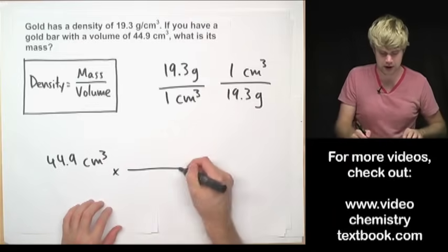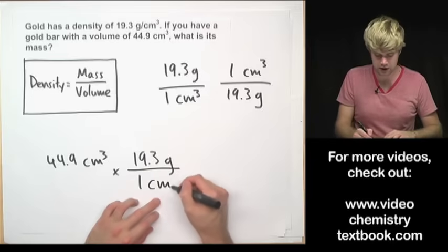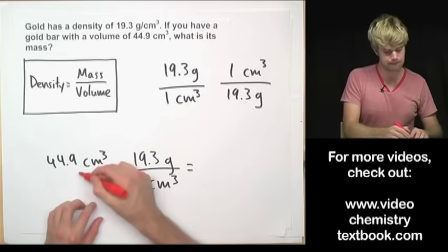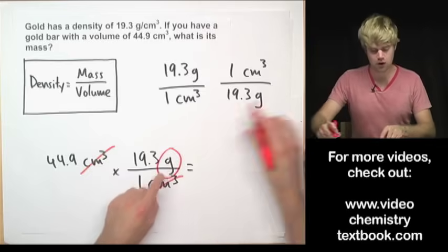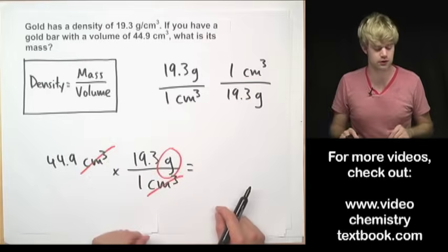I'm going to write it in here and you'll see why: 19.3 grams up here on the top, one cubic centimeter on the bottom, and now I have cubic centimeters up here and I have cubic centimeters down here and I'm left with grams as my unit. So I chose the right version of the conversion factor.